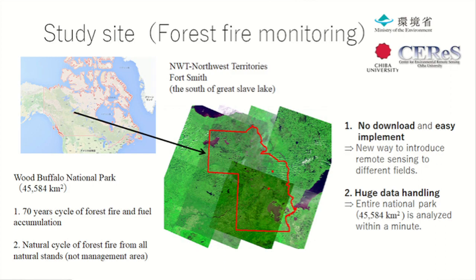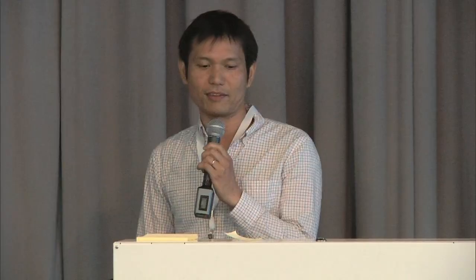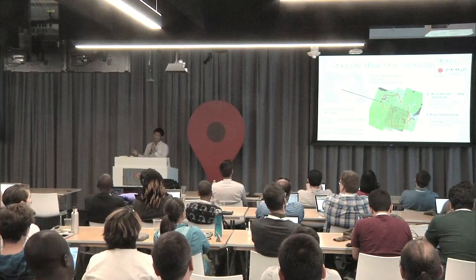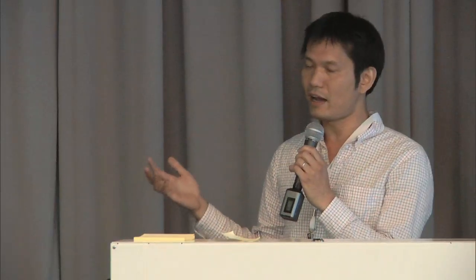A UAV can only cover about 30 minutes or so. So in that case, it's better to use Google Earth Engine. Google Earth Engine has a huge advantage — you don't need to download satellite images, it's easy to implement, and we can use a server for huge data handling. That is a great advantage.